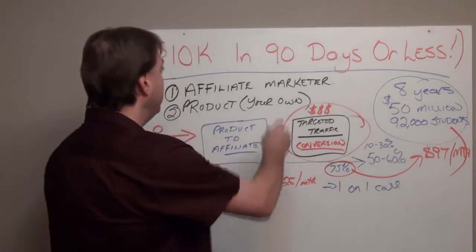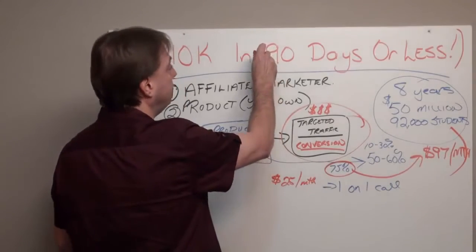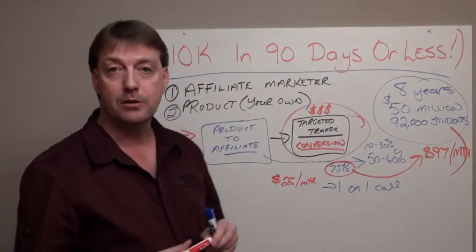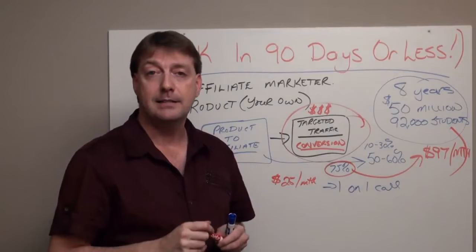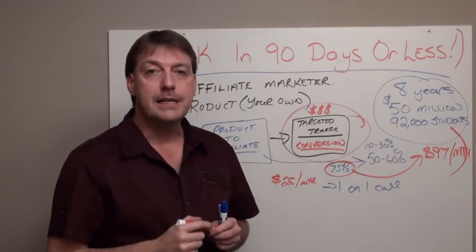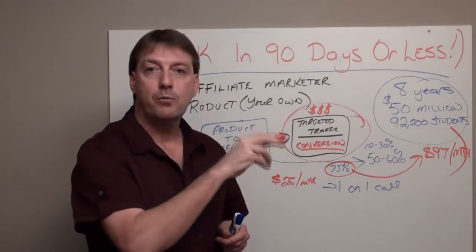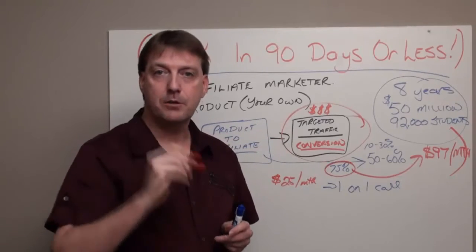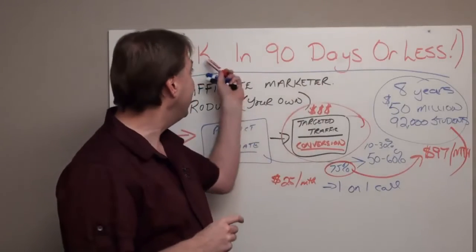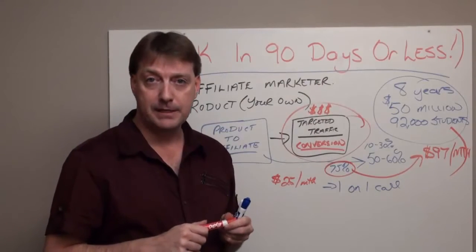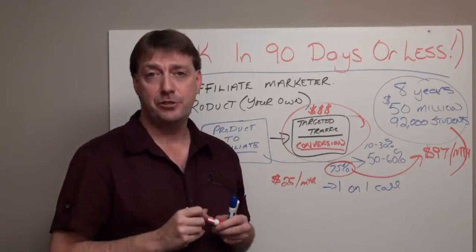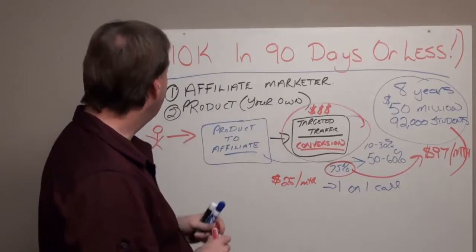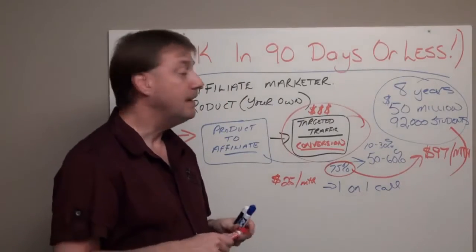With that one-on-one call, I'm not going to expect you to write down your 90-day success plan. I'm going to get to know you, you're going to get to know me, I'm going to find out where you are, what you're doing, and what you have done. Then I'm going to be the one taking the notes, and I'm going to create the 90-day success plan for you to earn $10,000 a month in residual income, and personally send that plan to you.